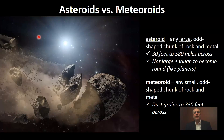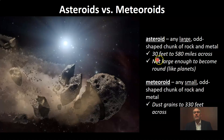So how is that different than an asteroid? Please notice the very first thing — large versus small. Everything else is going to be the same about what an asteroid and a meteoroid are. So an asteroid is any large, odd-shaped chunk of rock and metal. An asteroid is going to be anything from 30 feet across — basically 10 yards on a football field — to 580 miles across. So asteroids are much larger than meteoroids. They're still odd-shaped chunks of rock, but much, much larger. Asteroids are not large enough to become round, like planets and some dwarf planets are.